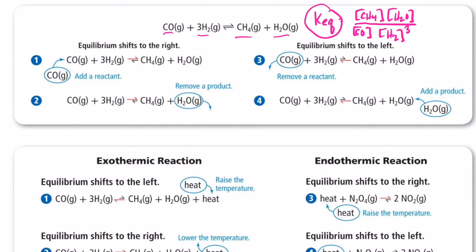Remember, this equilibrium constant will not change so long as we mess with the temperature. So if we add a reactant — example number one — we're adding carbon monoxide. If the CO concentration gets bigger and the equilibrium constant can't change, the H₂ concentration would have to get smaller, and the water vapor and methane concentrations would have to increase to compensate for that increase in CO.